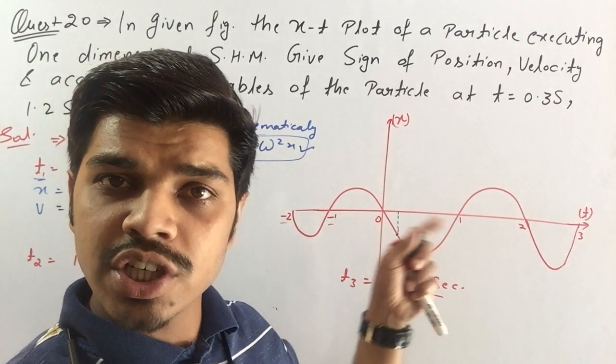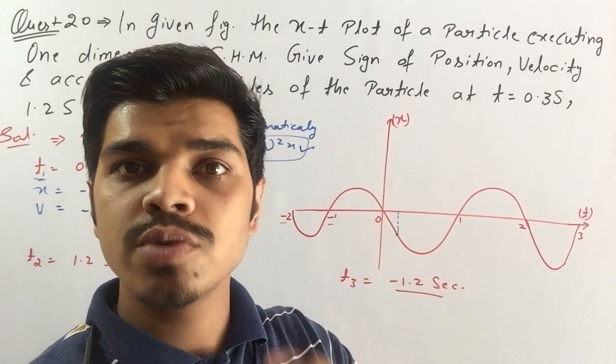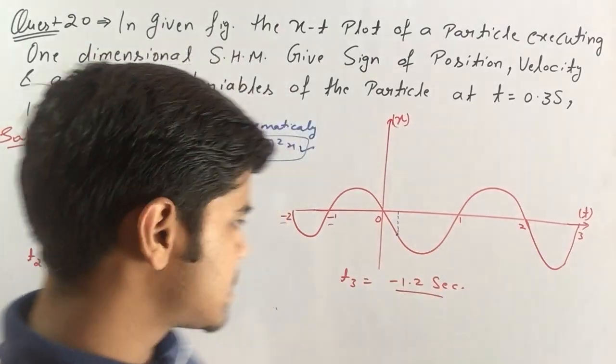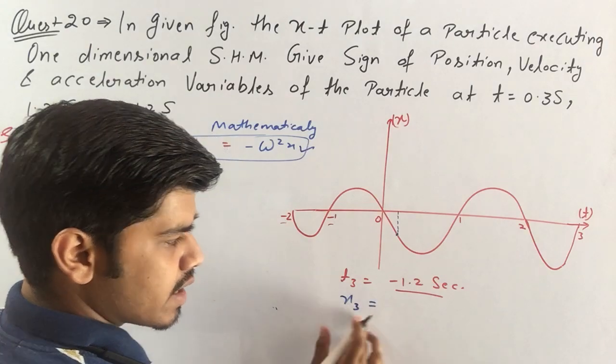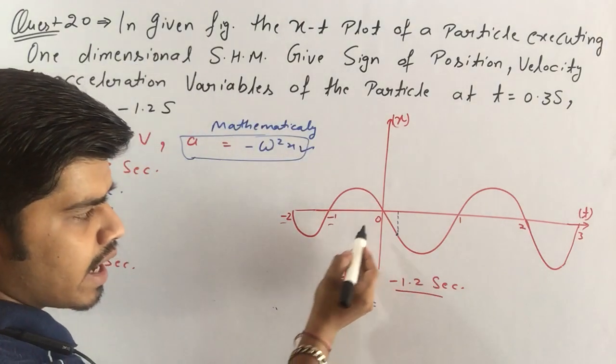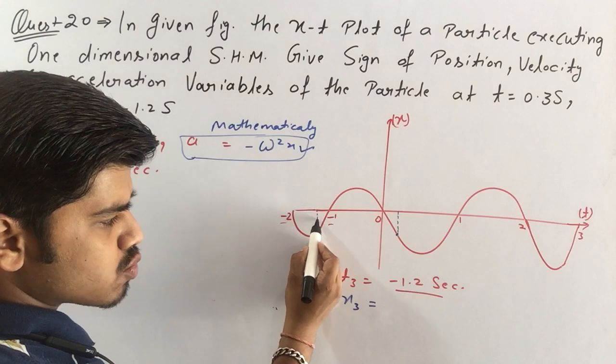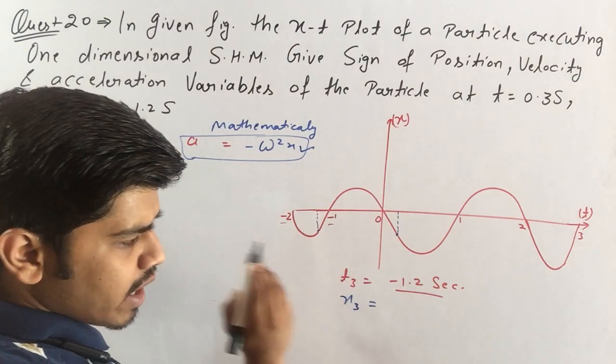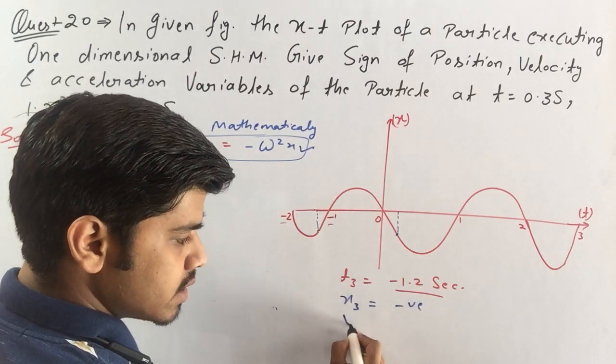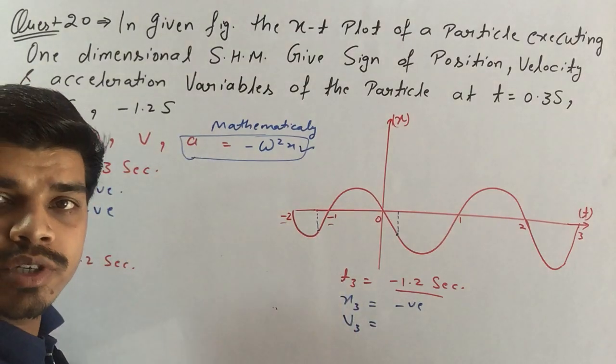If change in time is negative then velocity is positive like this section here. At 1.2 second, this point x value is negative, but when I see velocity I see this point.